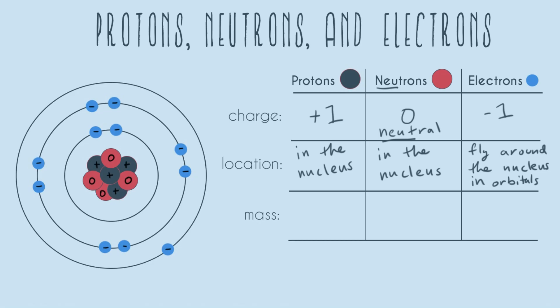So overall, the nucleus has a positive charge. And the reason that atoms can be neutral is because the positive charge of the protons in the nucleus can be canceled out by the negative charge of the electrons that are flying around the nucleus in orbitals.